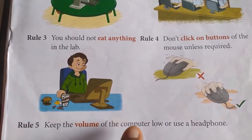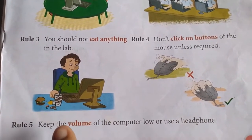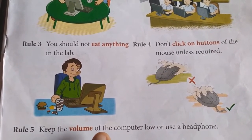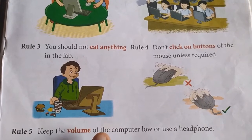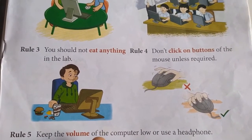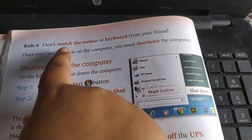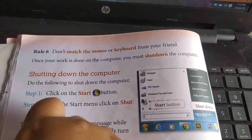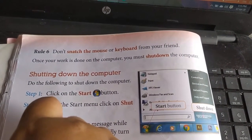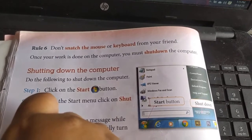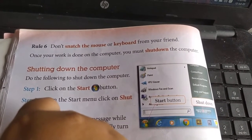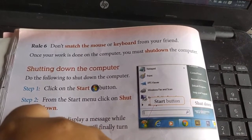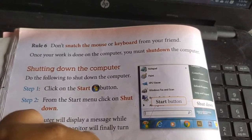Rule 5: keep the volume of the computer low, or use a headphone. Never put the volume very high as it disturbs others in the lab — either keep it low or use a headphone. Rule 6: do not snatch the mouse or keyboard from your friend. Ask politely, and when your friend finishes their work, they will allow you to use the computer.